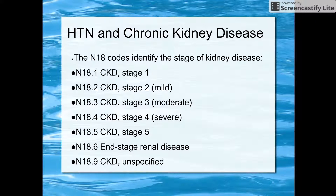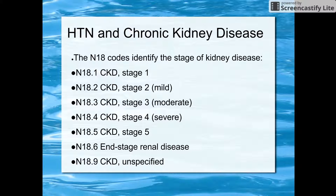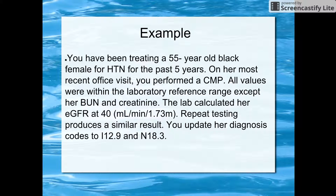The N-18 stages are: N-18.1 is stage 1, N-18.2 is stage 2 or mild, N-18.3 is stage 3 or moderate, N-18.4 is severe, N-18.5 is stage 5, N-18.6 is end-stage renal disease, and N-18.9 is unspecified.